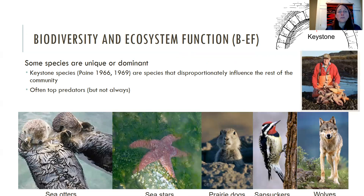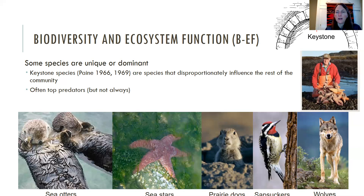Some species are unique or dominant in their effects. A keystone species — a term coined by Robert Paine — is a species that disproportionately influences the rest of the community. They are often top predators, but not always. Examples include sea otters in kelp forests, sea stars, prairie dogs, sapsuckers, and wolves. A lot of these organisms influence the rest of the community by modifying conditions and interactions around them.